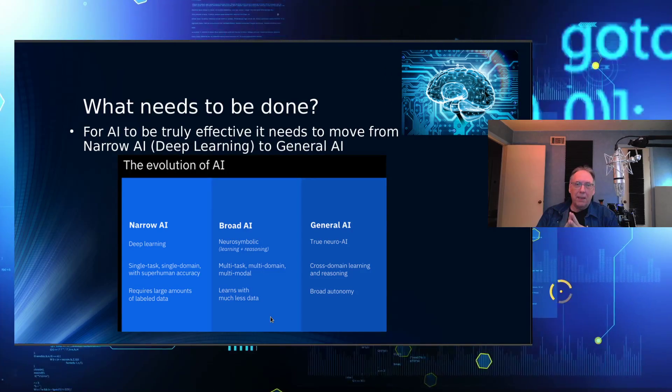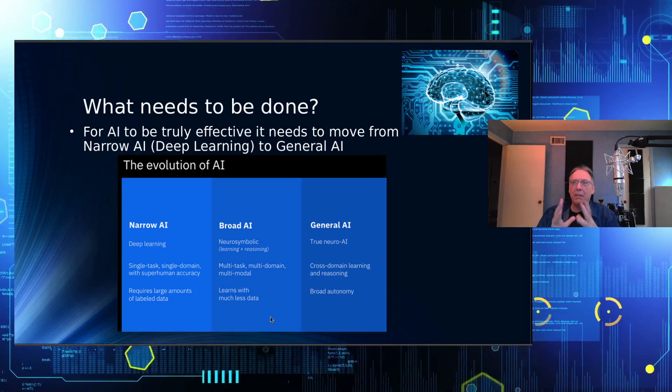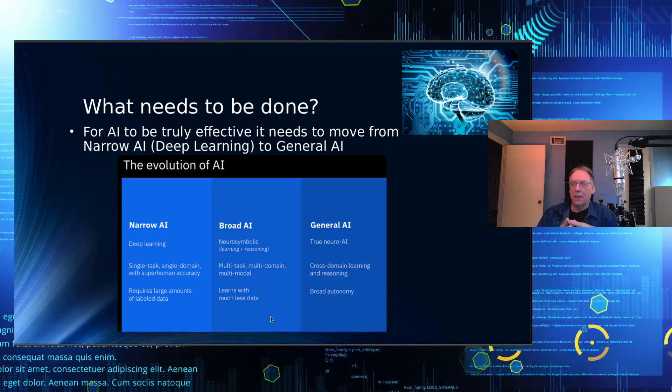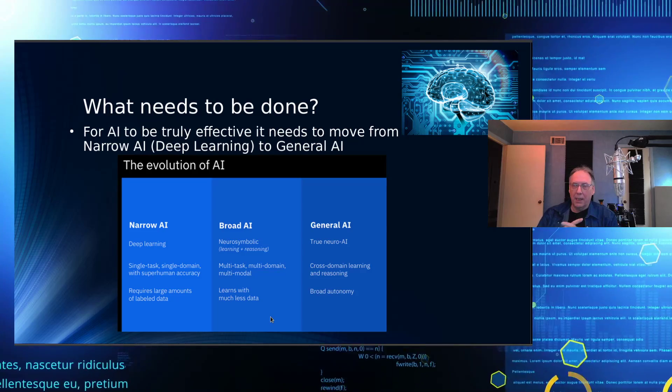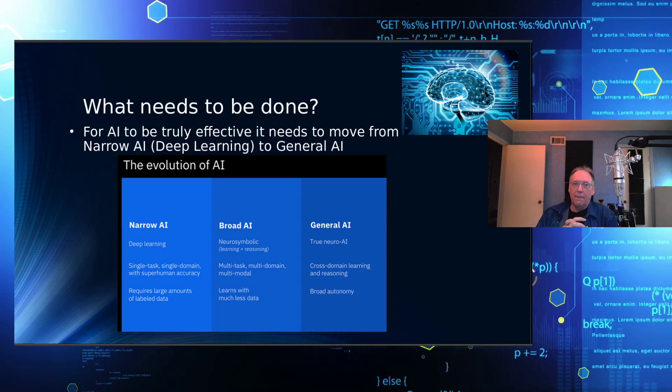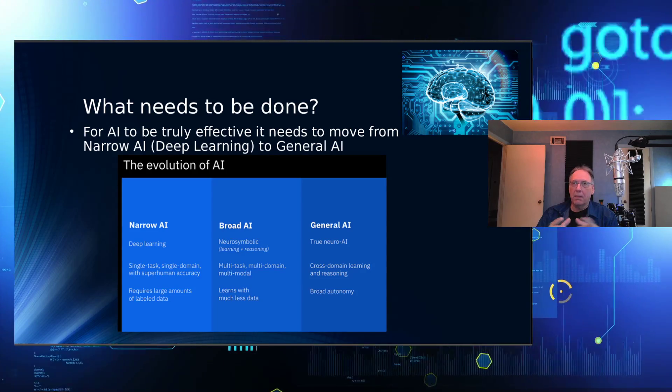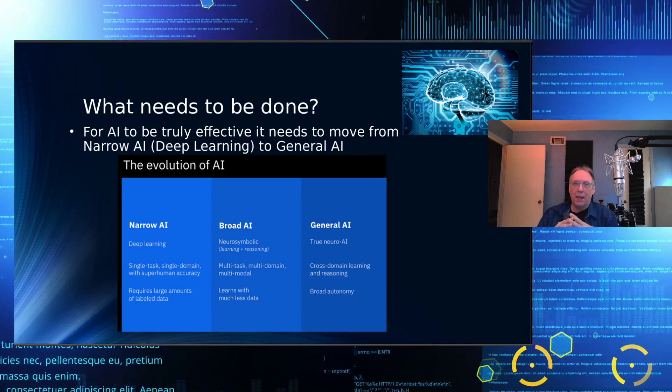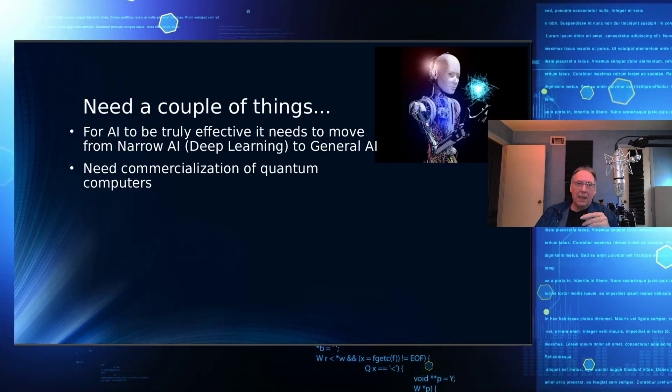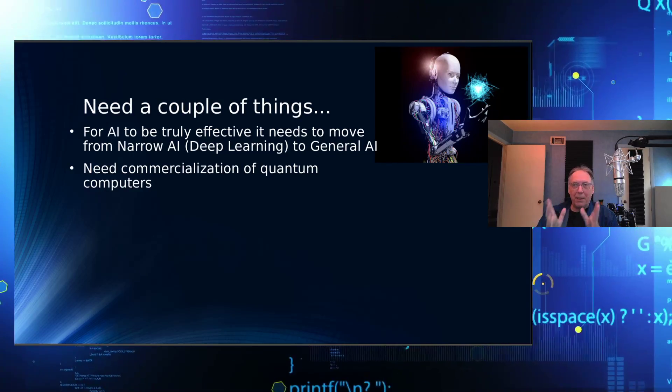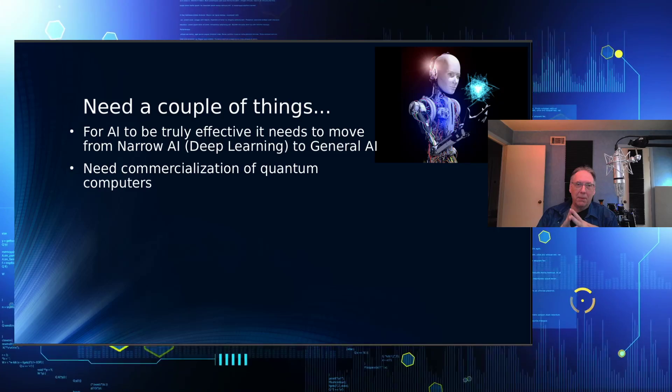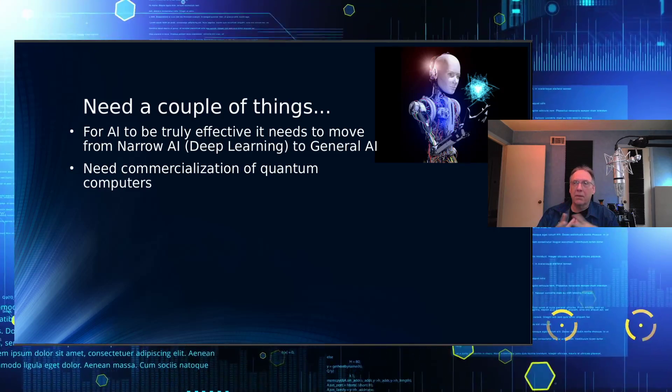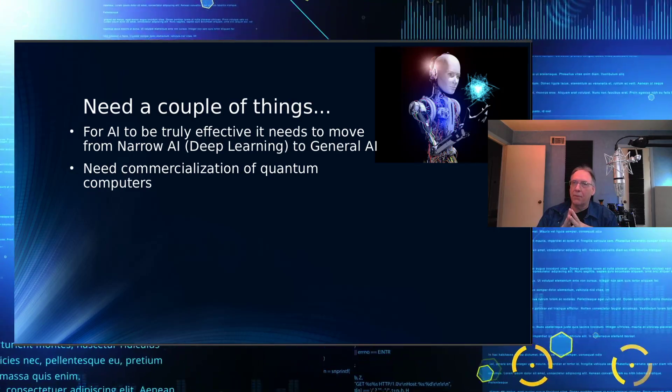So what needs to be done? So effectively, we need to move from narrow AI, which is more computational intensive, over to general AI, which is less so. And that would reduce the amount of computing time required. Now, general AI may consume a lot more power. So we need a couple of things to be able to do this. We need the commercialization of quantum computers as well.